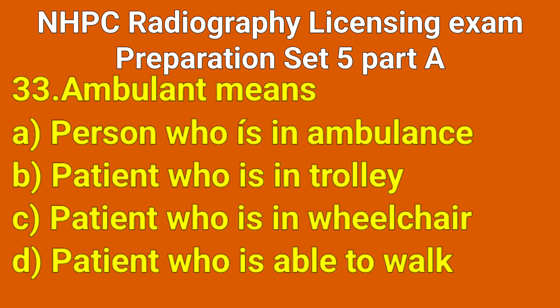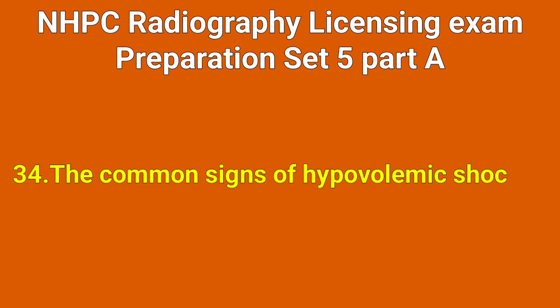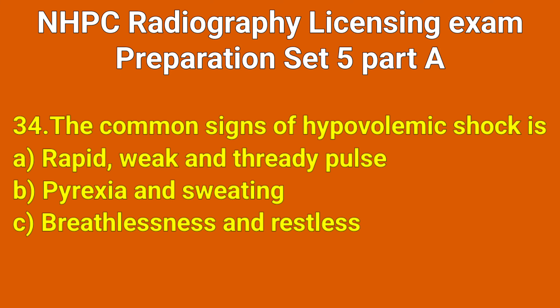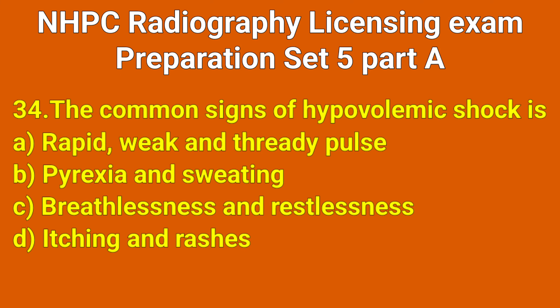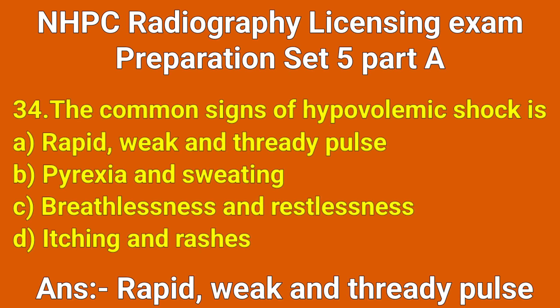Question number 33: Ambulant means which option? Correct answer: option D, a patient who is able to walk. Question number 34: The common sign of hypovolemic shock is which option? Correct answer: option A, rapid weak and thready pulse.